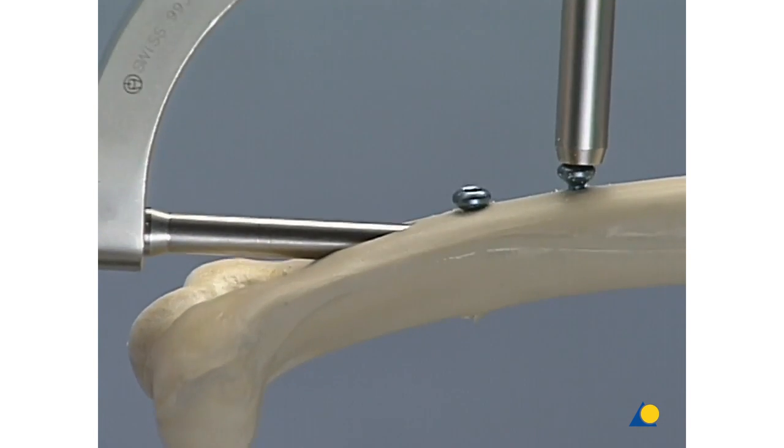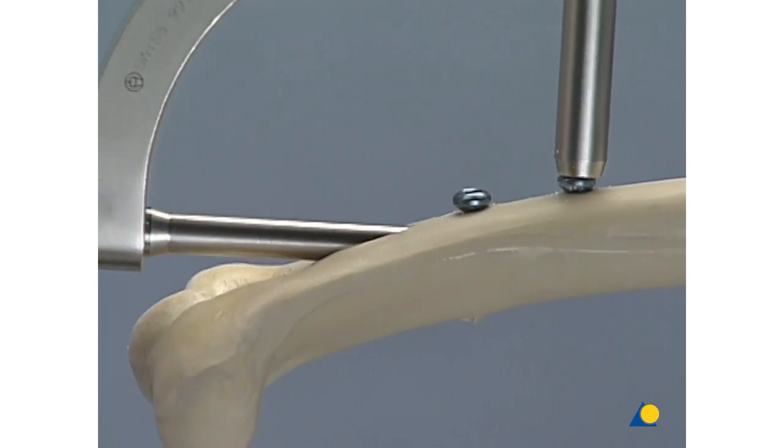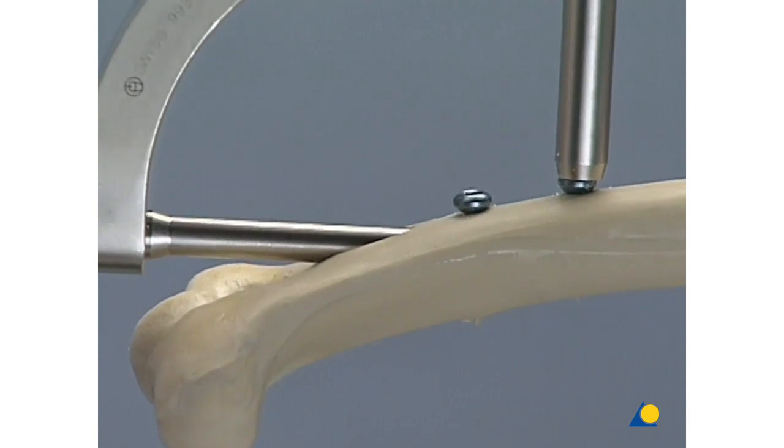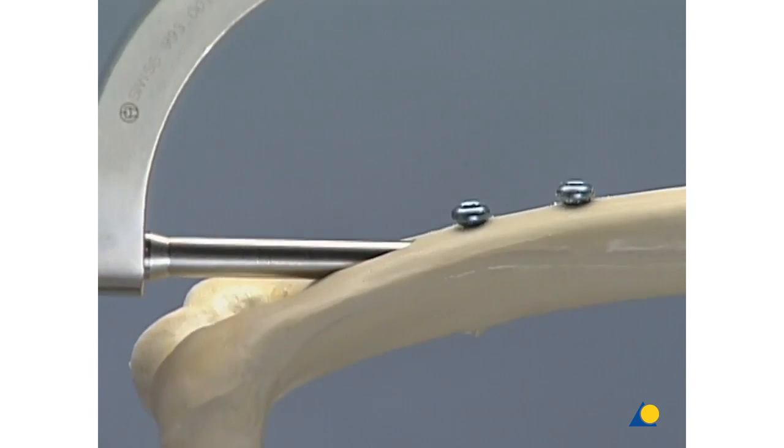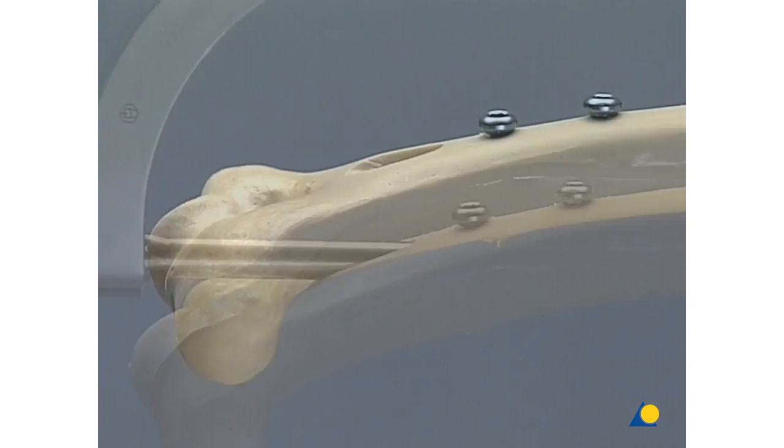To hold the reduction, a second locking bolt has to be inserted through the static hole. The compression device is now removed and an end cap inserted into the end of the nail.